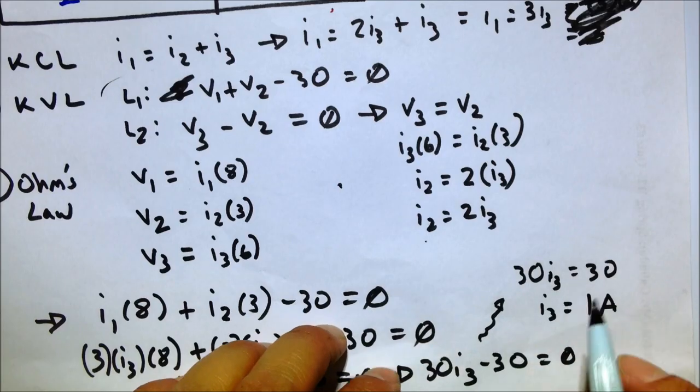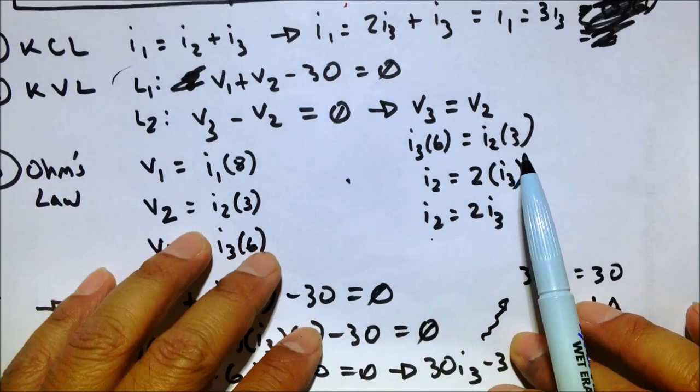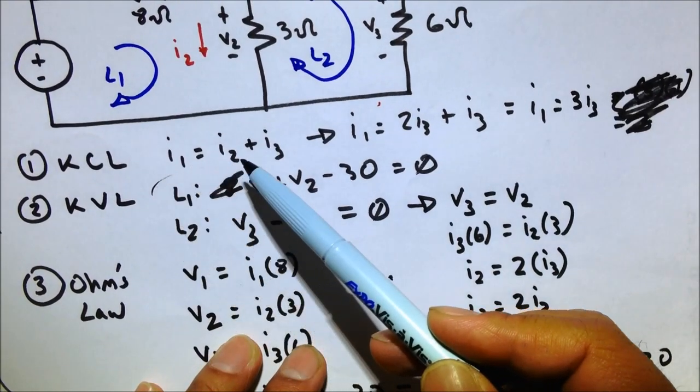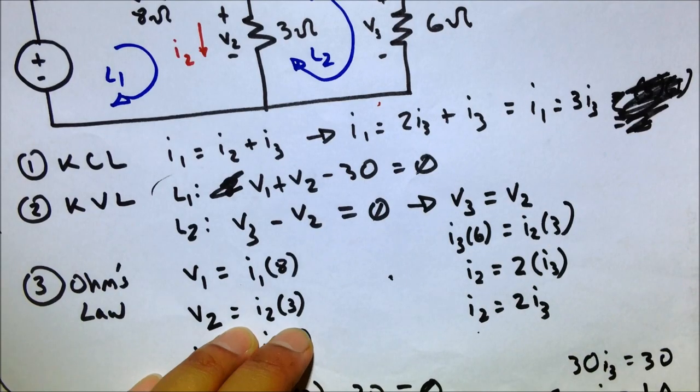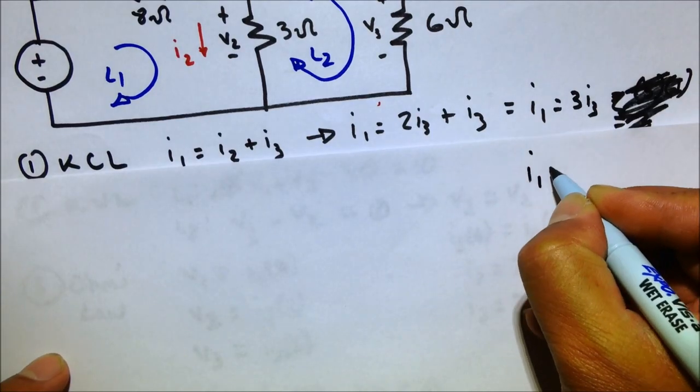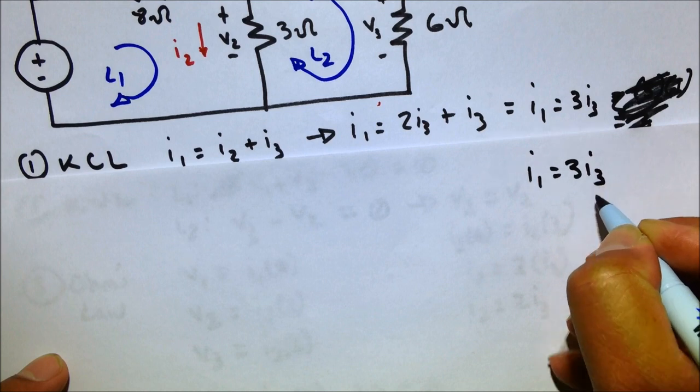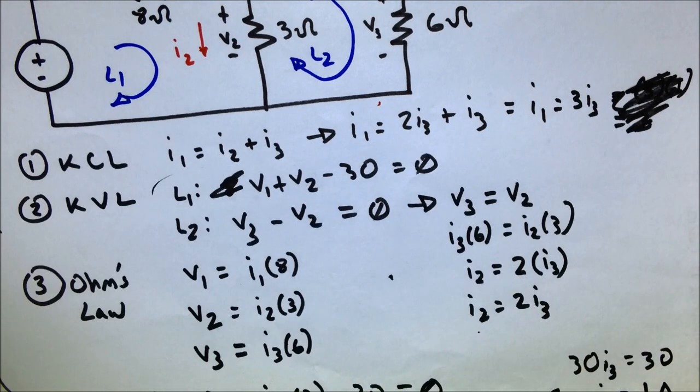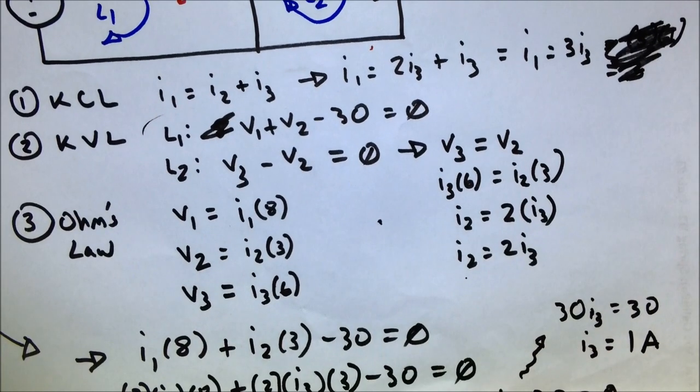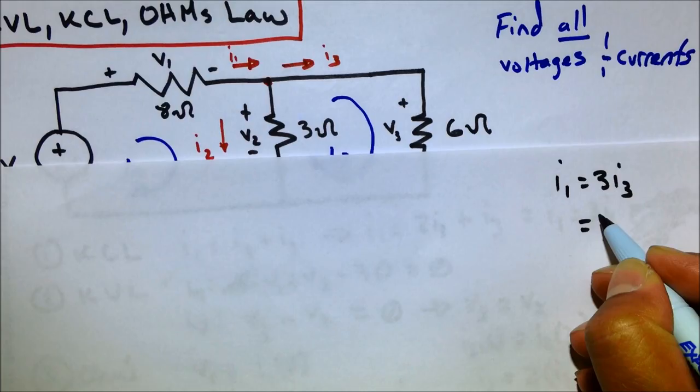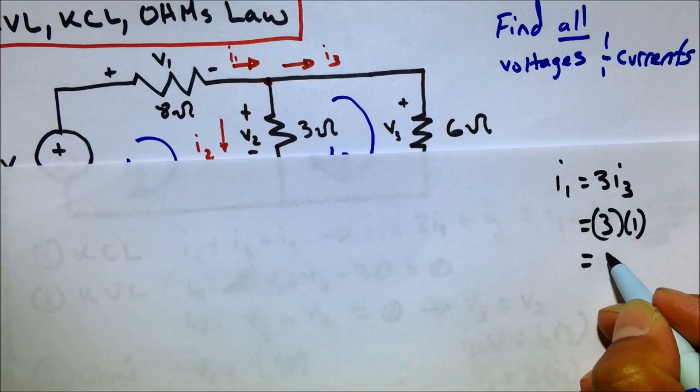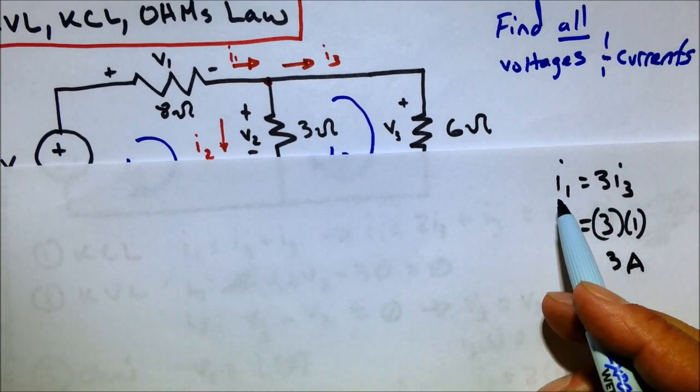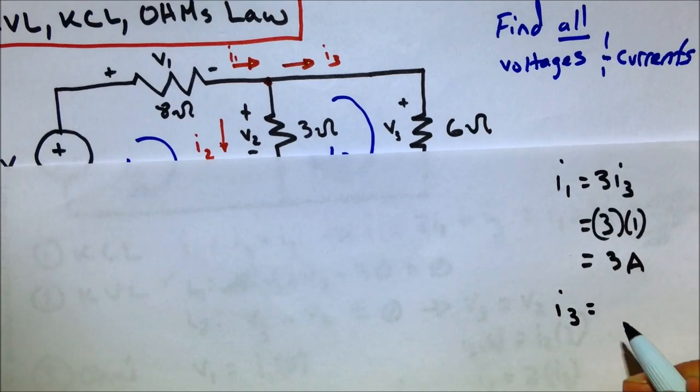So for instance, up here, using our KCL equation, we notice that I1 equals 3 times I3. So let's move to your paper. So I1 equals 3 times I3, and we know I3 is just 1 amp, way down there, 1 amp. So let's go ahead and put 1 amp here. So that means 3 times 1. So I1 equals 3 amps. So that's good. We have I1. We know I3 equals 1 amp.